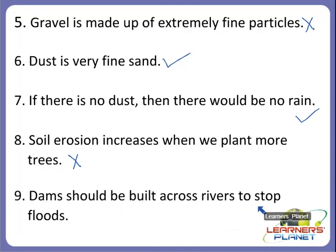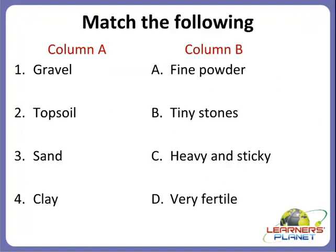Now the next one: dams should be built across rivers to stop floods. Is this the correct one? Yes — it is the correct statement. Dams should be built across rivers to stop floods. Because of dams, the fast-flowing water will not easily take away the topsoil, and if there is topsoil, plants will be able to grow. So I hope you are clear with this activity.